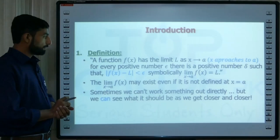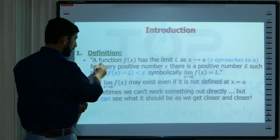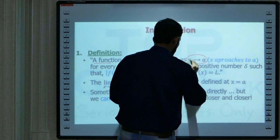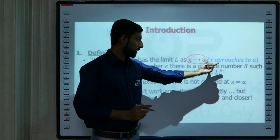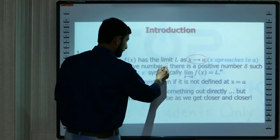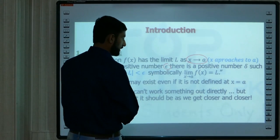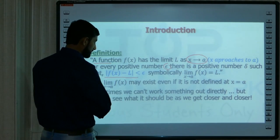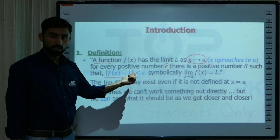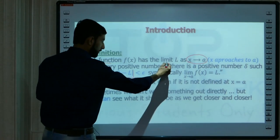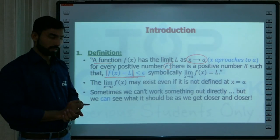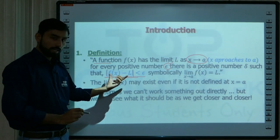Sab se pehle: a function f(x) has the limit L as x approaches to a. Yeh ek function hai. For every positive number epsilon, there is a positive number delta such that |f(x) − L|, agar aap is ko calculate karein, yeh hamesha less than epsilon aaye ga. Yeh kuch conditions hain jo fulfill honi chahiye jab bhi aap kisi bhi function ki limit ko define kar rahe hain.